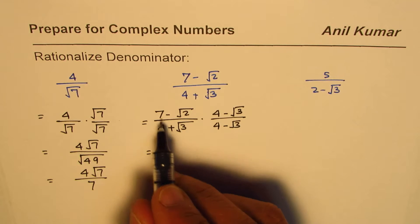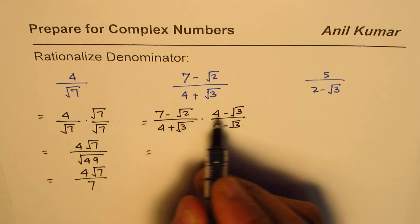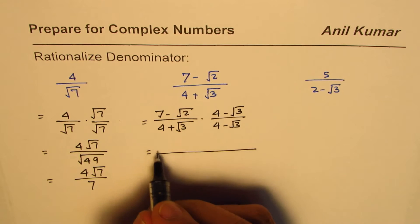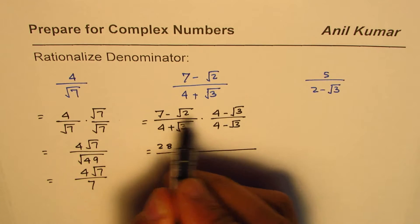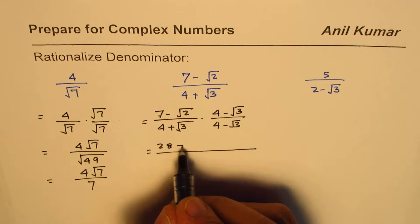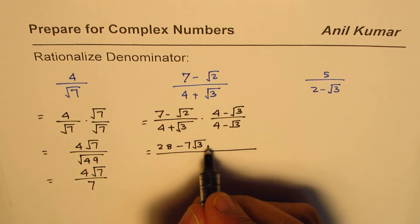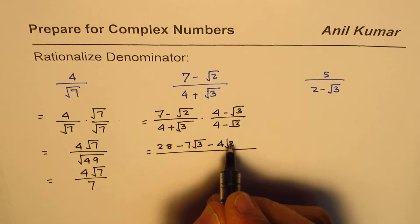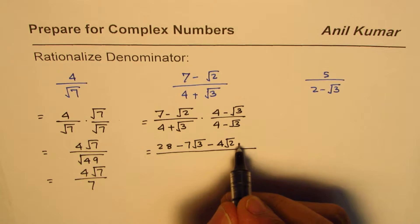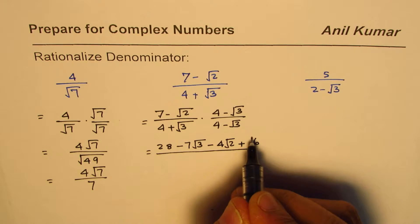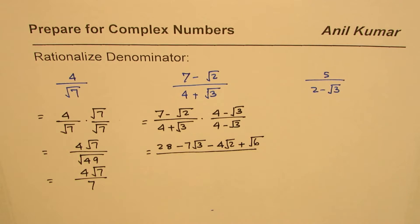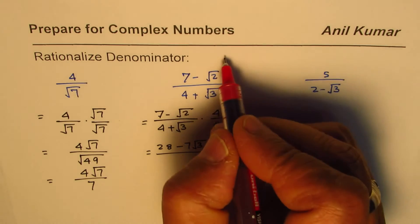It gives us 7 times 4 is 28, 7 times minus square root 3 is minus 7 square root 3, square root 2 times 4 is minus 4 square root 2, and this negative negative is plus square root of 6. The denominator, we are doing (a+b)(a-b) equals a squared minus b squared.